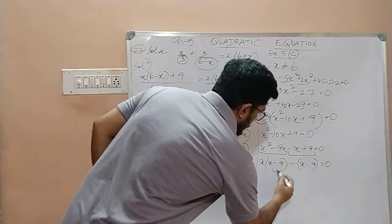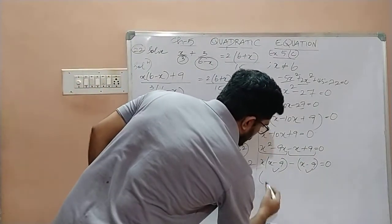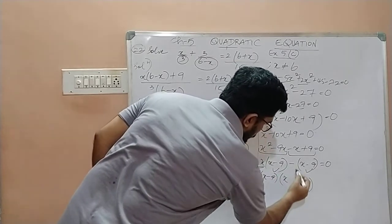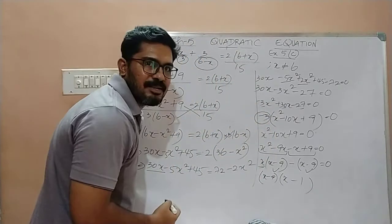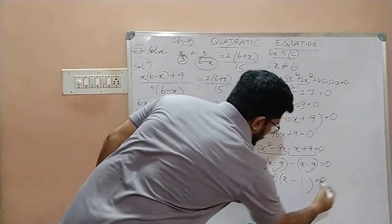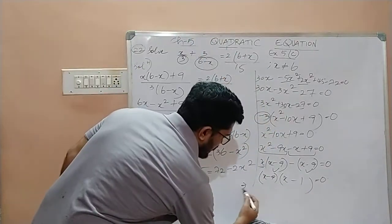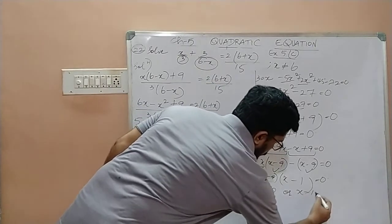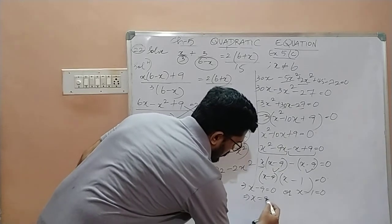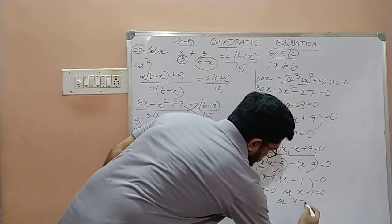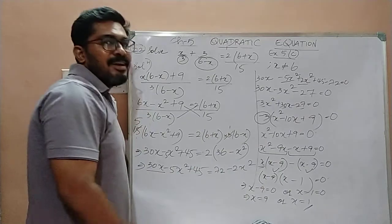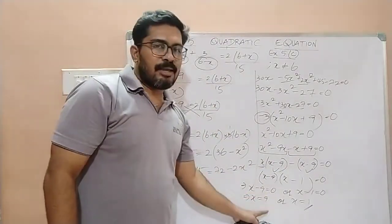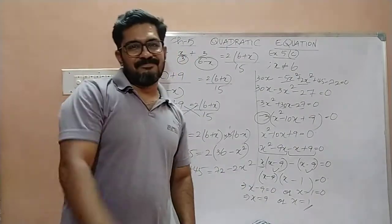Now, children, in these two terms, x minus 9 is common. So, you get x minus 9 into what? Here, what is left? x. Here, what is left? Minus 1 is left. Which is equal to 0. So, this implies x minus 9 is 0. Or, x minus 1 is 0. Therefore, x is equal to 9. Or, x is equal to 1. Hence, the solution of this given equation is either 9 or 1. Easy?